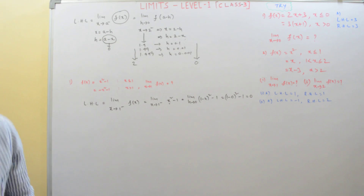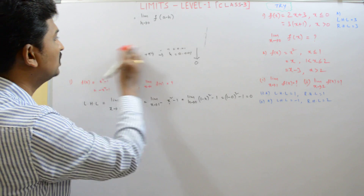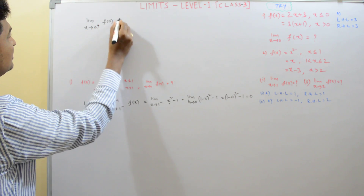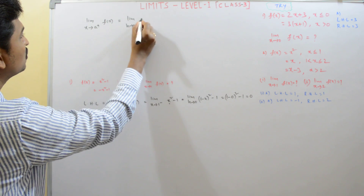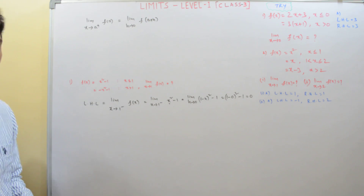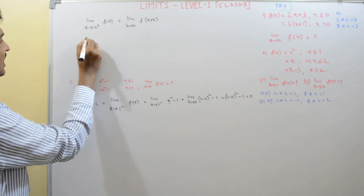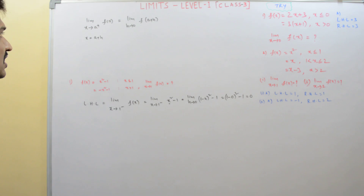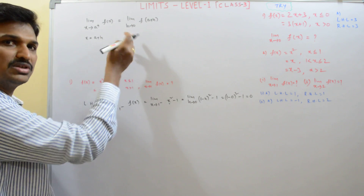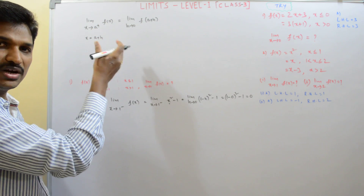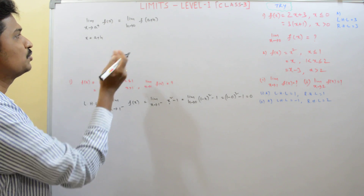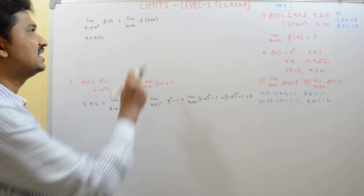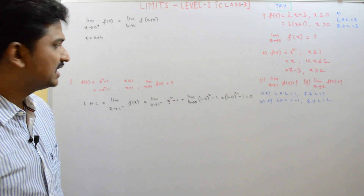Now we learn how to calculate the right hand limit of a function. Limit x approaches to a plus f of x can be written as limit h approaches to 0, f of a plus h. As x approaches to a from right, all x values are greater than a and very, very near to a. That can be written as x equals a plus h. As x approaches to a from right, h approaches to 0.